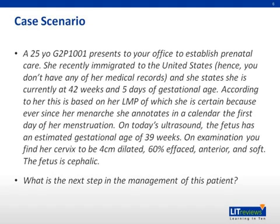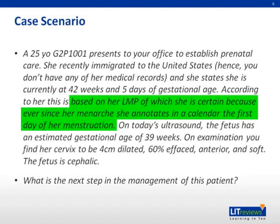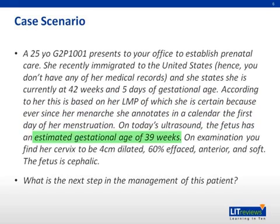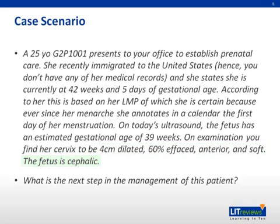A 25-year-old G2P1001 presents to your office to establish prenatal care. She recently immigrated to the United States, so you don't have any of her medical records, and she states she is currently at 42 weeks and five days of gestational age. According to her, this is based on her last menstrual period, of which she is certain because ever since her menarche she has annotated in a calendar the first day of her menstruation. On today's ultrasound, the fetus has an estimated gestational age of 39 weeks. On examination, you find her cervix to be four centimeters dilated, 60% effaced, anterior, and soft. The fetus is cephalic. What is the next step in the management of this patient?